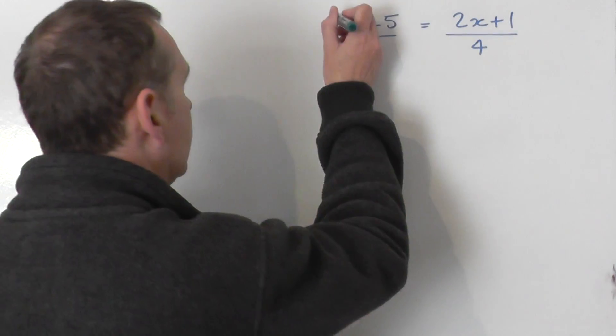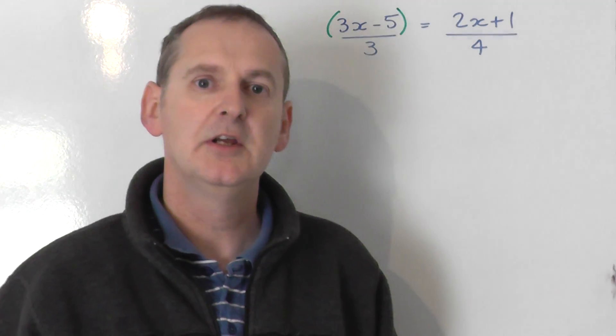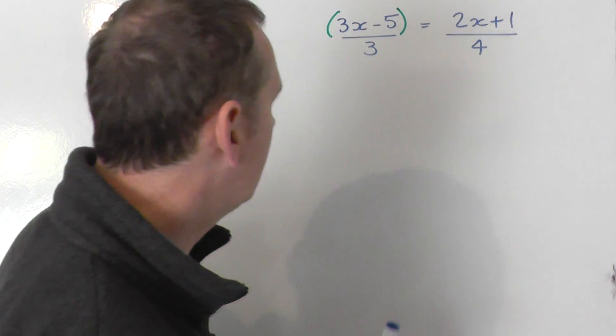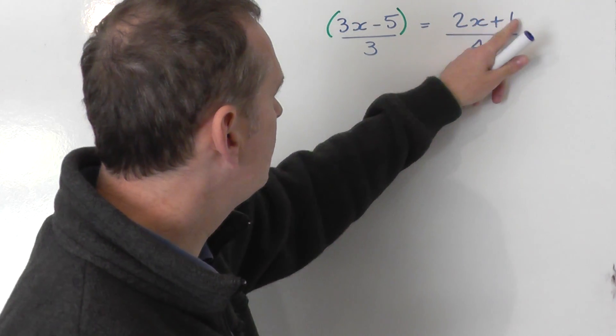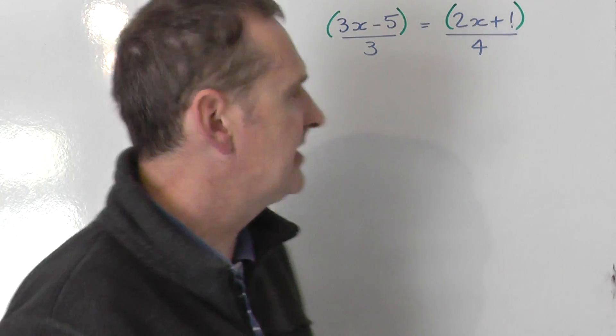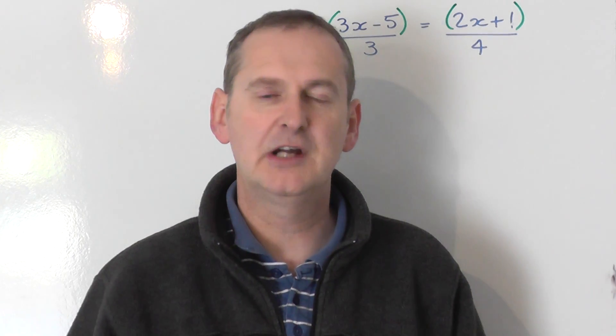That will be the easiest way to solve this equation. The right hand side has a similar thing going on. You've got all of 2x plus 1 being divided by 4, so I'm going to put all of 2x plus 1 in a bracket and it's divided by 4. So this question involves brackets and fractions.